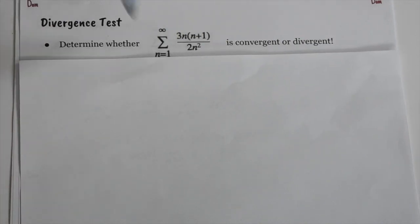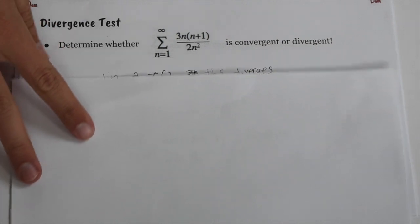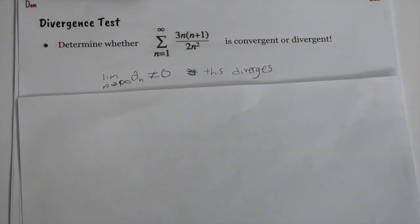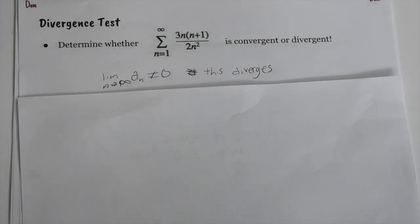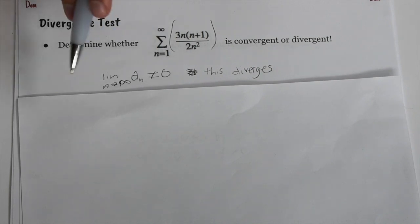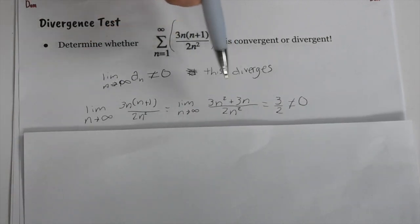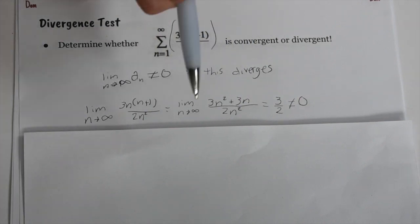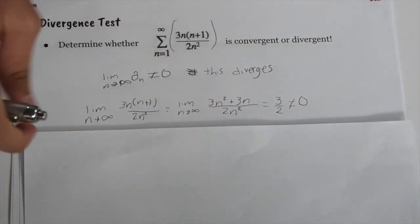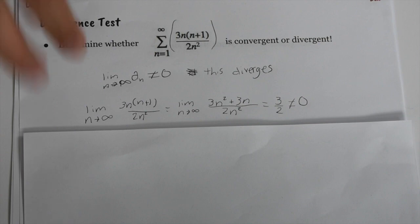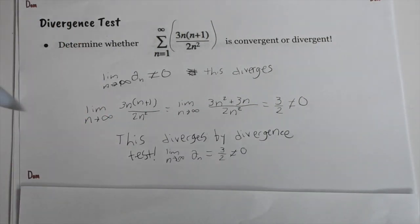For the divergence test: determine whether this series is convergent or divergent. Important: if the limit goes to zero, this does not prove convergence — it only proves divergence when the limit is non-zero. The rule is: if the limit as n approaches infinity of a_n does not equal zero, it diverges. We take the limit, factor out to get (3n² + 3n)/(2n²), and the limit goes to 3/2. Since 3/2 ≠ 0, it diverges by the divergence test.